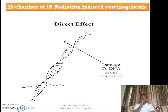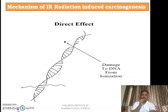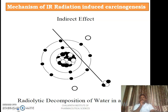In the direct mechanism, whenever a cell is chronically exposed to IR radiation, since 80 percent of the cell is made up of water and the remaining portion is cellular components, there is a chance that the radiation will directly hit the DNA in the cell, causing DNA damage followed by mutations. If those mutations happen in oncogenes, anti-oncogenes, and apoptosis regulatory genes, it results in the development of tumors.